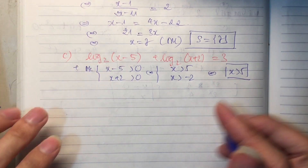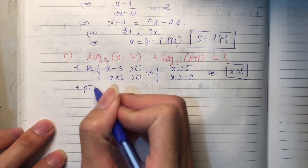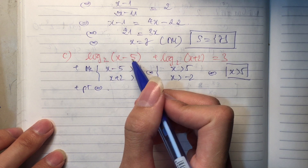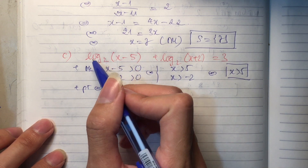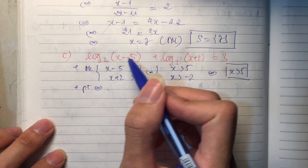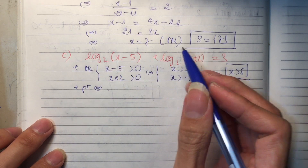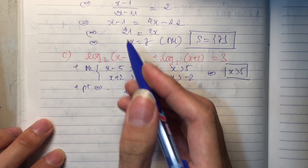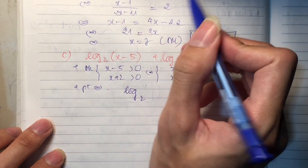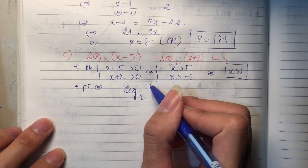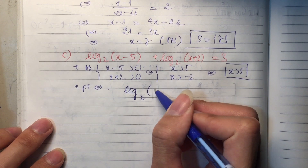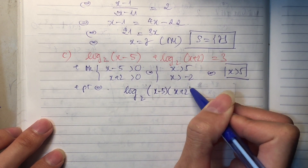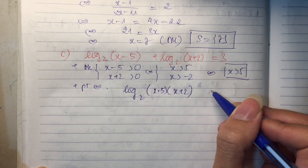Đến đây chúng ta áp dụng tính chất: log_A(B1) cộng log_A(B2) thì ta nhân lại. Lúc nãy là trừ thành chia, bây giờ cộng hóa thành log của phép nhân. Chỗ này chính là log cơ số 2 của (x trừ 5) nhân cho (x cộng 2), và bằng 3. Ta đổi 3 thành log cơ số 2 của 2 mũ 3 tức là bằng 8.